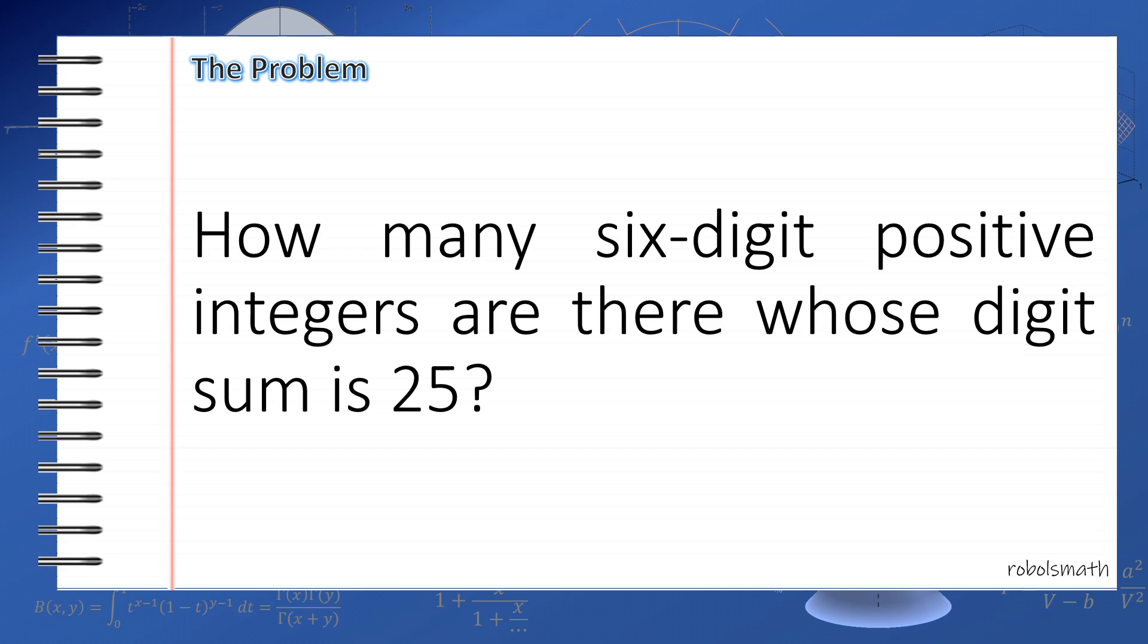The problem asks for the number of six-digit positive integers whose digit sum is 25. If you haven't watched it, I highly recommend that you first watch my video on the introduction to stars and bars and also the video on the sum of dice problem. The video on the sum of dice problem is actually very similar to the solution to this one, so I will opt not to discuss as much details in this video. Okay, so let's begin.